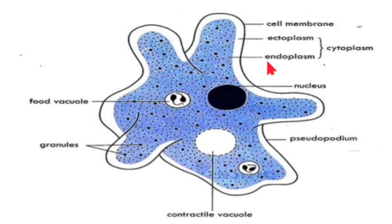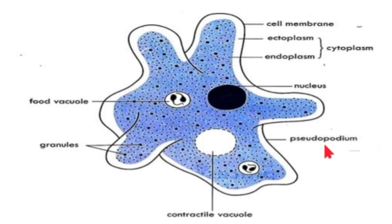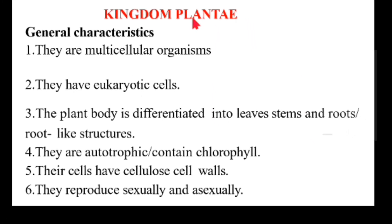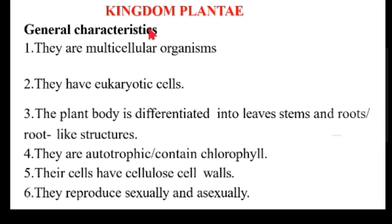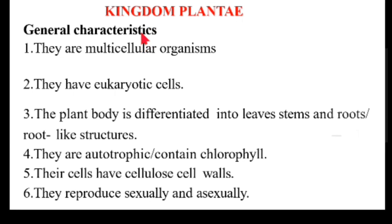This is the structure of Amoeba. You have the cell membrane, you have the ectoplasm and endoplasm — both combined they are called cytoplasm. You have the nucleus, the food vacuole, the contractile vacuole, the granules, and the pseudopodium — which is the locomotory structure.